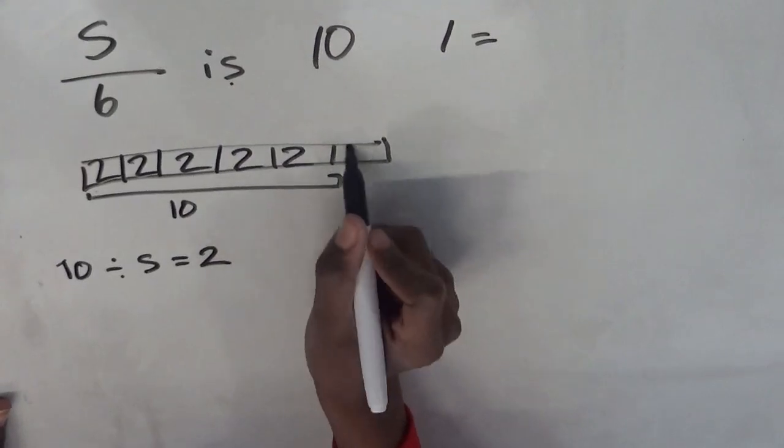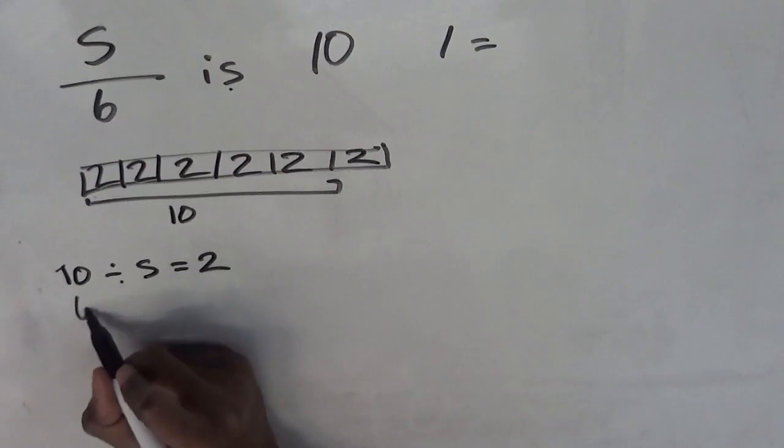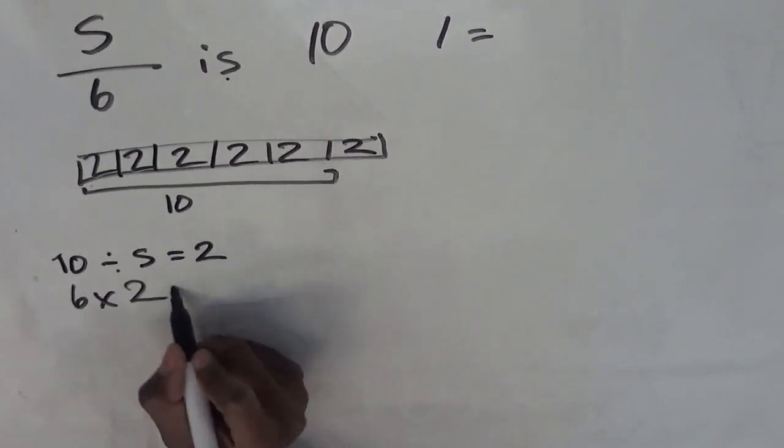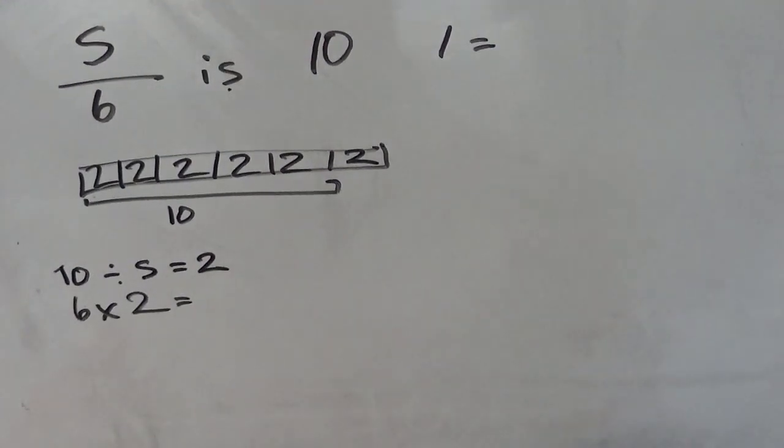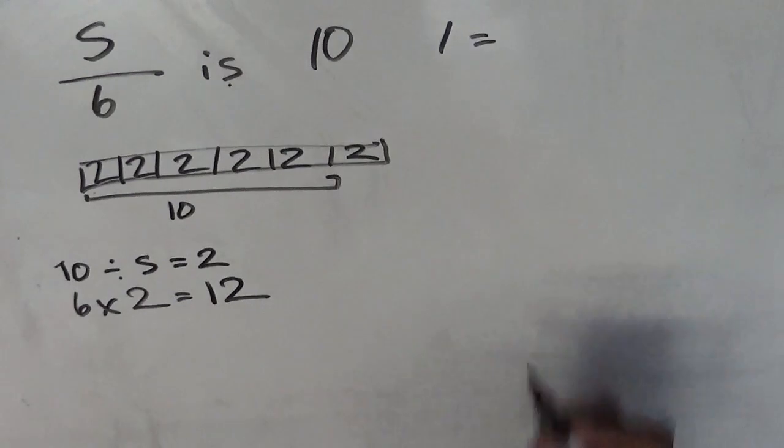Then from there, we can find the value of the whole bar, by doing 6, the amount of blocks in the whole bar, times 2, the value of each block, which will give us 12.